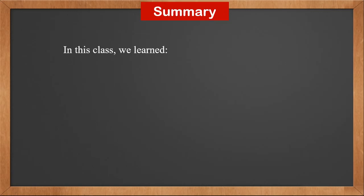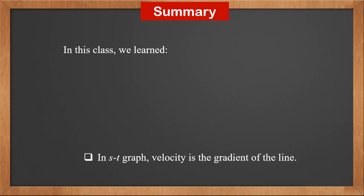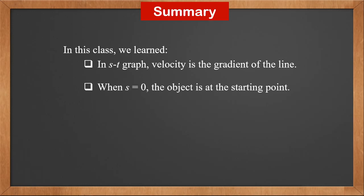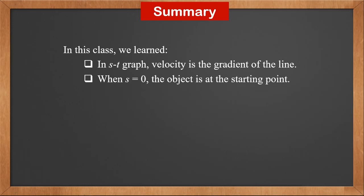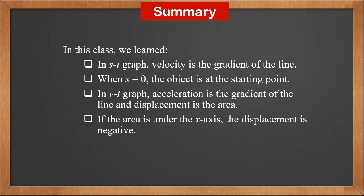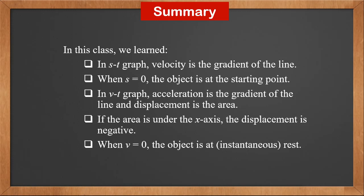In this class, we learned: In the ST graph, velocity is the gradient of the line. When S is 0, the object is at the starting point or back at the starting point. In the VT graph, acceleration is the gradient of the line and displacement is the area. If the area is under the x-axis, the displacement is negative. When V is 0, the object is at rest or instantaneous rest.